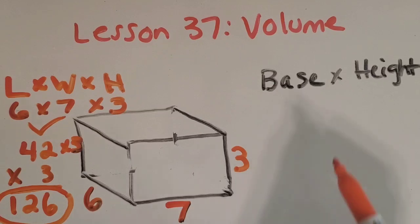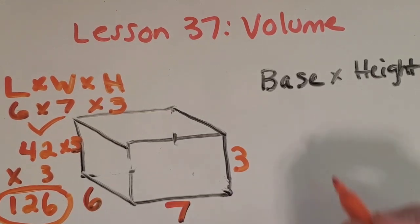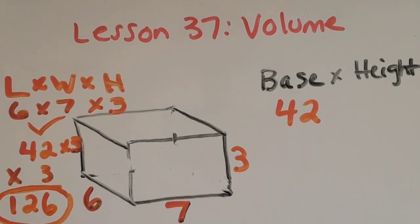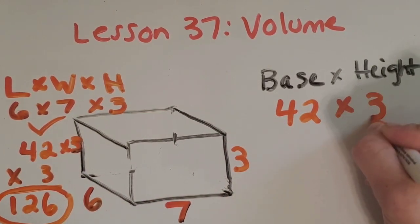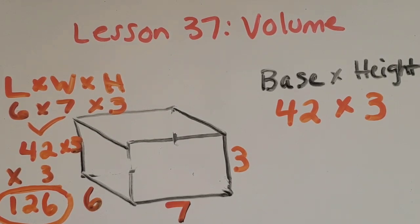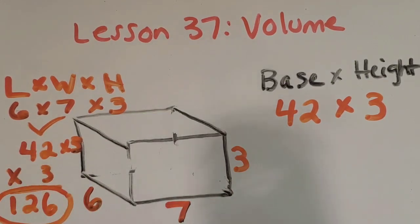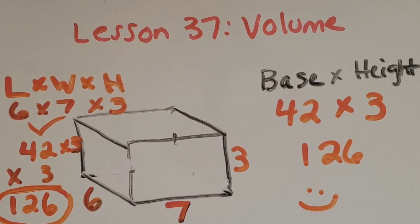Let's try base times height and see what we get. To find the base, we need to think about how it's six rows of seven. The base would be made up of 42 blocks, and then we know it is three layers tall, so it's going to be three groups of those. Since we just did that, we don't need to solve it again — 42 times three is 126. So great job. Either way you chose, you got 126 blocks as the volume.